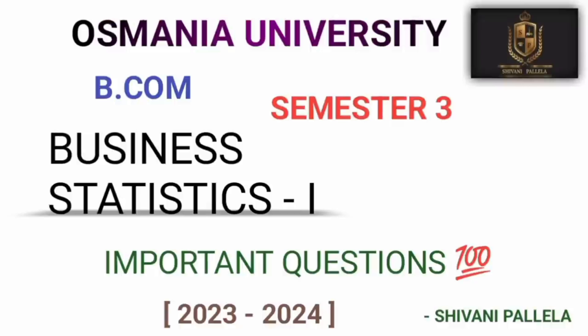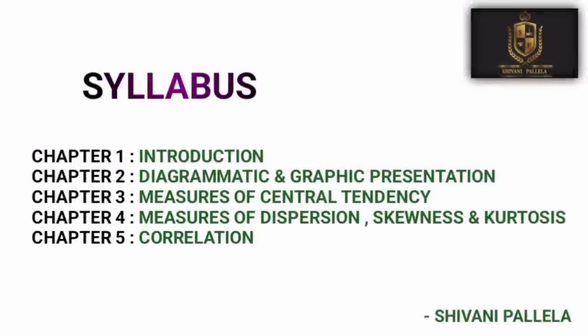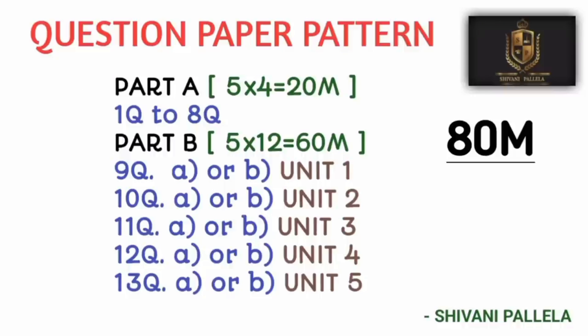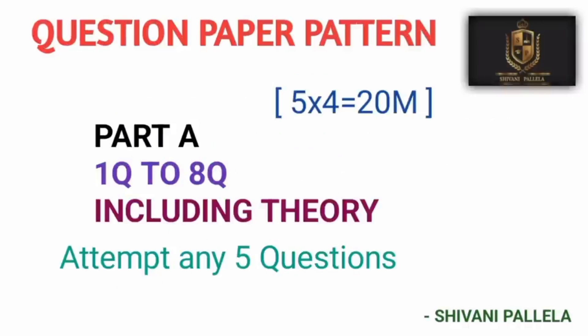In our channel we explain problematic methods, because without problematics you can't pass accounting subjects. The syllabus has only five units: Unit 1 is Introduction, Unit 2 is Diagrammatic and Graphical Presentation, Unit 3 is Measures of Central Tendency, Unit 4 is Measures of Dispersion, Skewness and Kurtosis, and Unit 5 is Correlation. This is an 80-mark paper and a 3-hour exam. In Part A, you need to attempt five questions, each carrying four marks, including theory as well as problematic parts. In Part B, each question has an internal choice — Question 9 comes from Unit 1, Questions 10 to 13 come from Units 2, 3, 4, and 5.